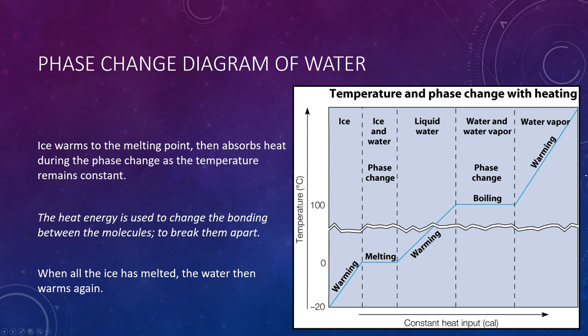Latent heat plays an important role in many atmospheric processes. In particular, when water vapor condenses to form cloud droplets, the latent heat of condensation is released, warming the surrounding air and giving it buoyancy. When the moisture content of air is high, this process can spur the growth of towering storm clouds.